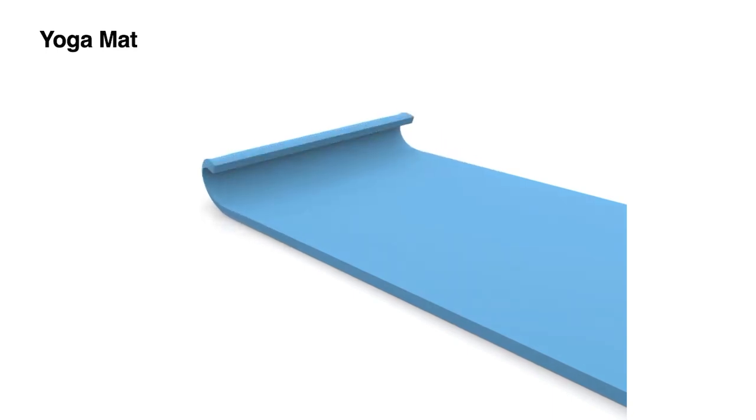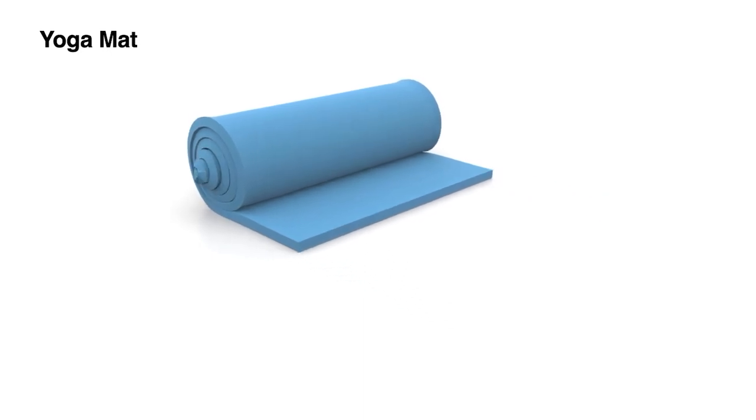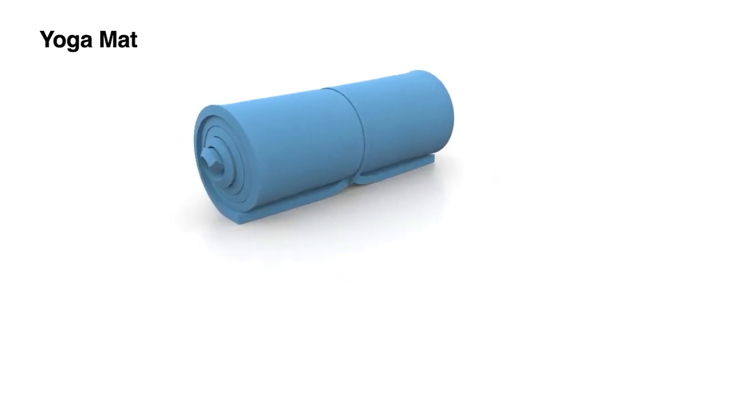In this example, we roll a yoga mat from one side on the floor and then tie it up with a buckle. Our method can capture the important thickness deformation during the simulation process.